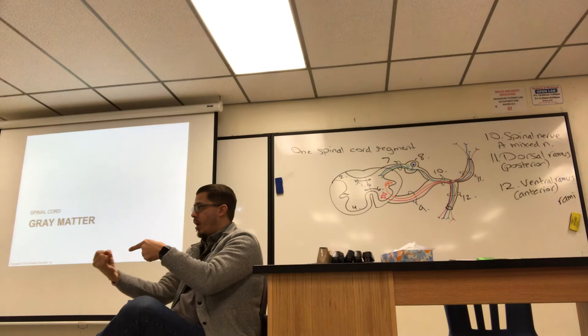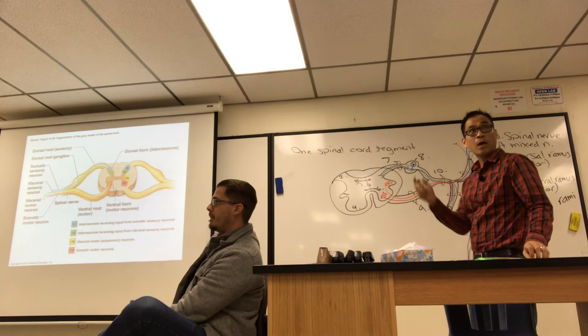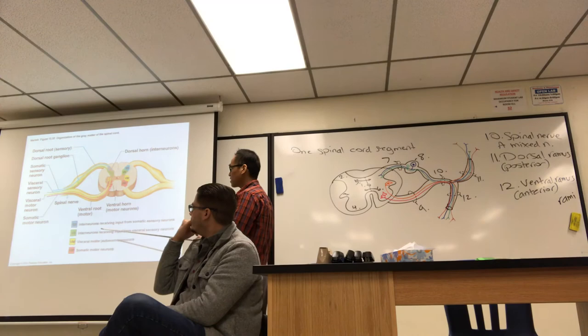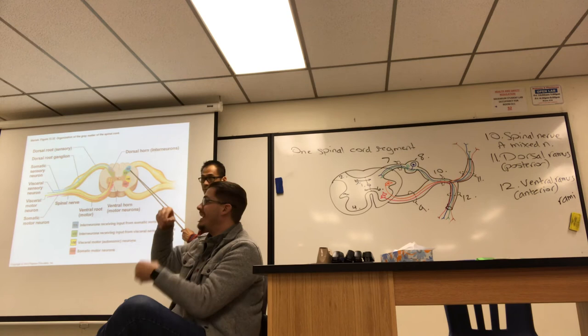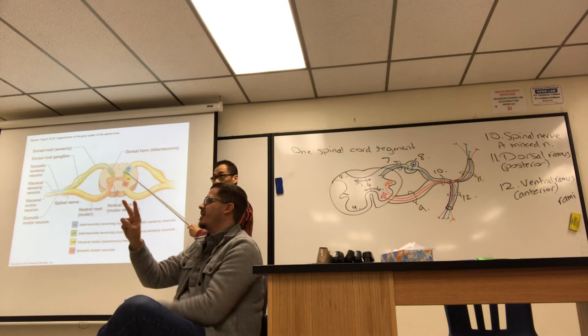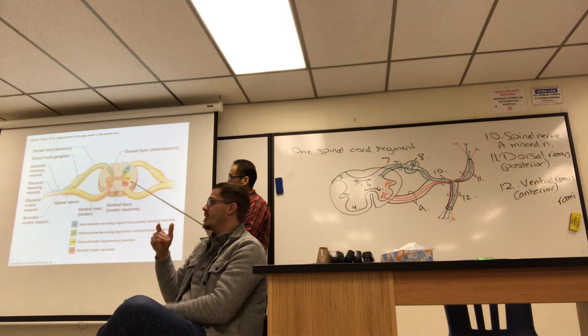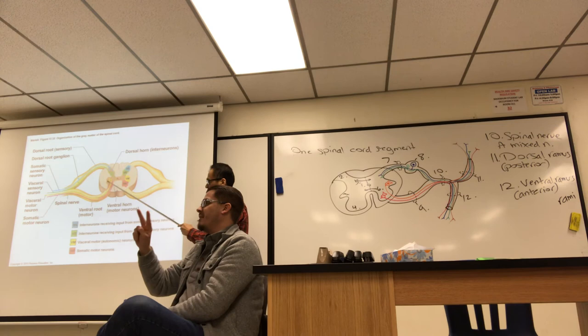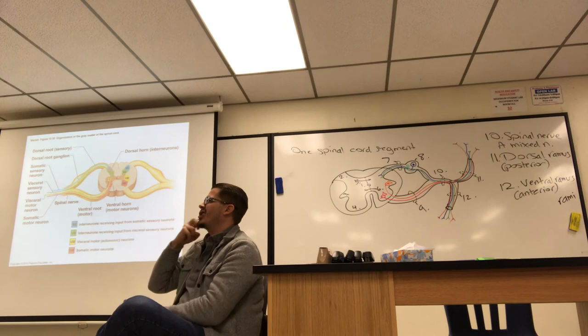The gray matter has dorsal, lateral, and ventral horns with different functional neurons. Somatic sensory cell bodies are in the dorsal ganglion and synapse in the dorsal horn; visceral sensory similarly. Visceral motor cell bodies are in the lateral horn; somatic motor cell bodies are in the ventral horn. The multipolar motor neurons extend out through the ventral root.